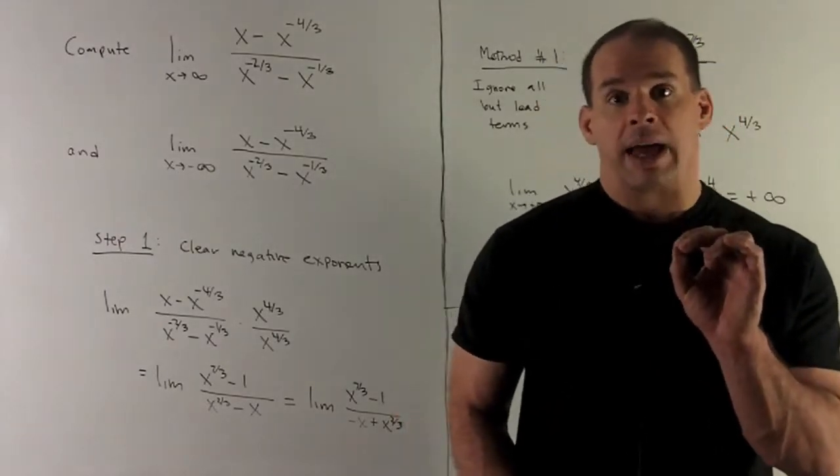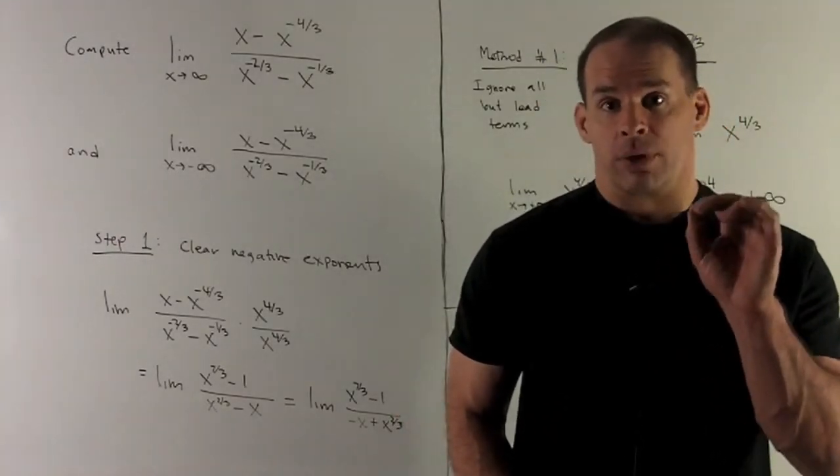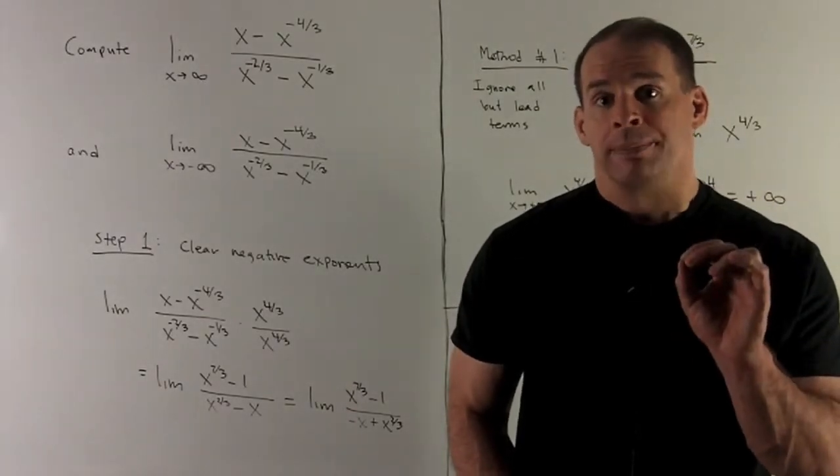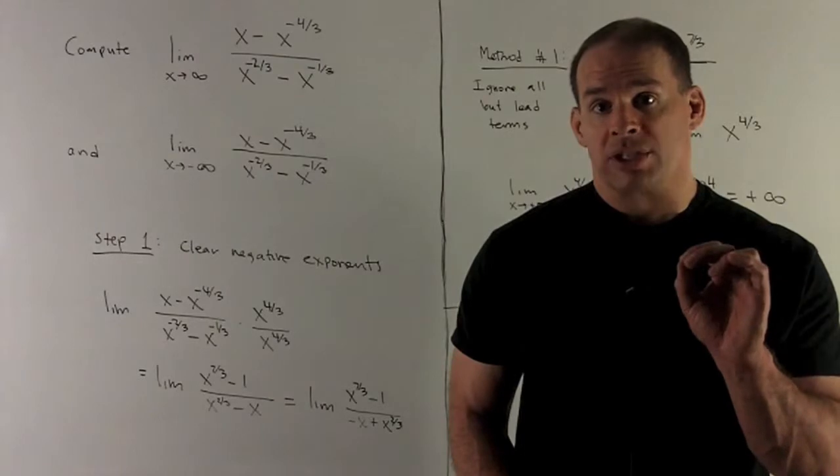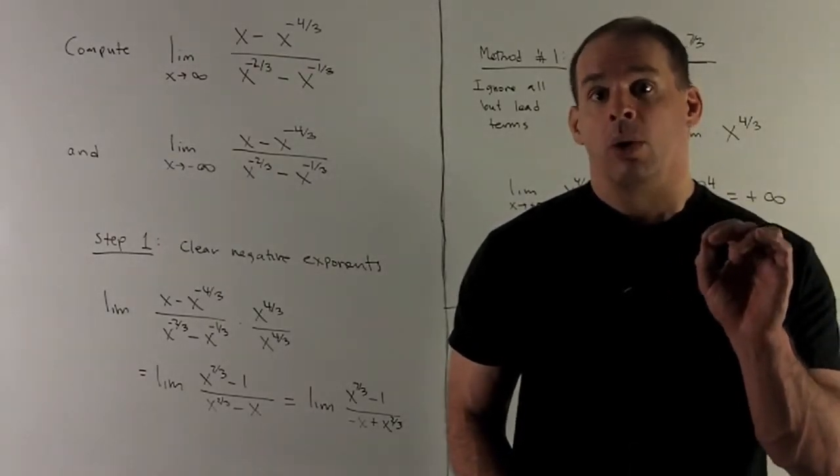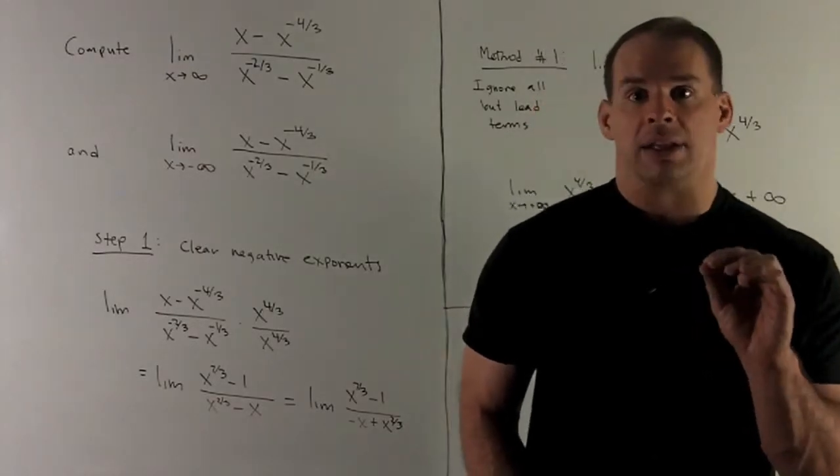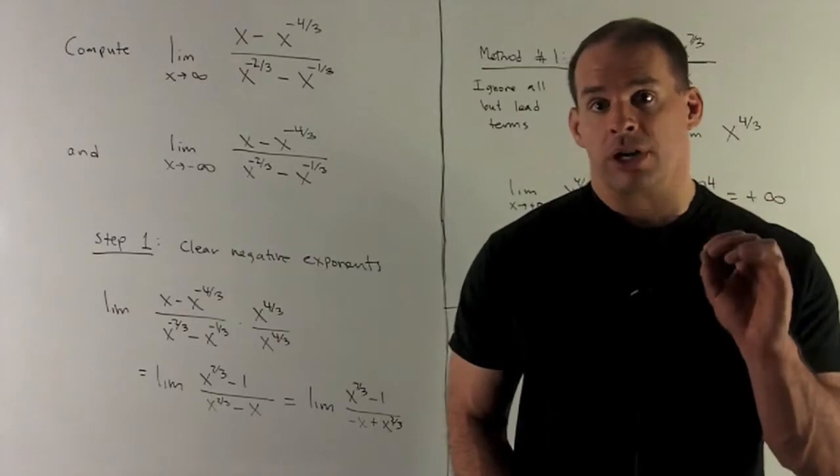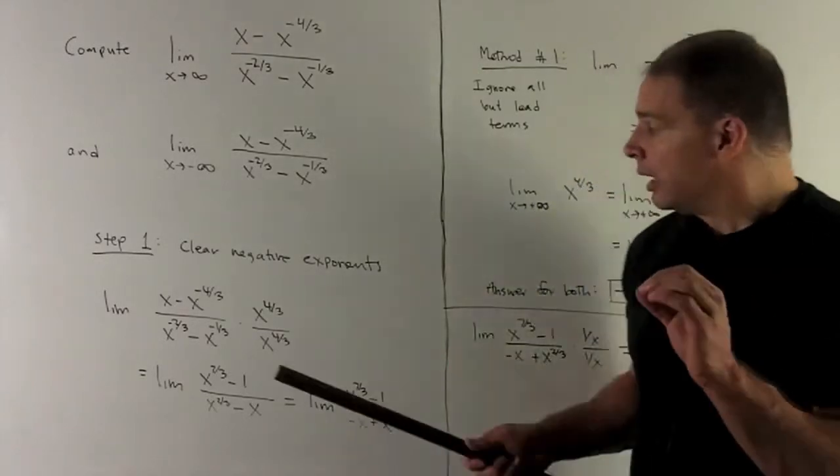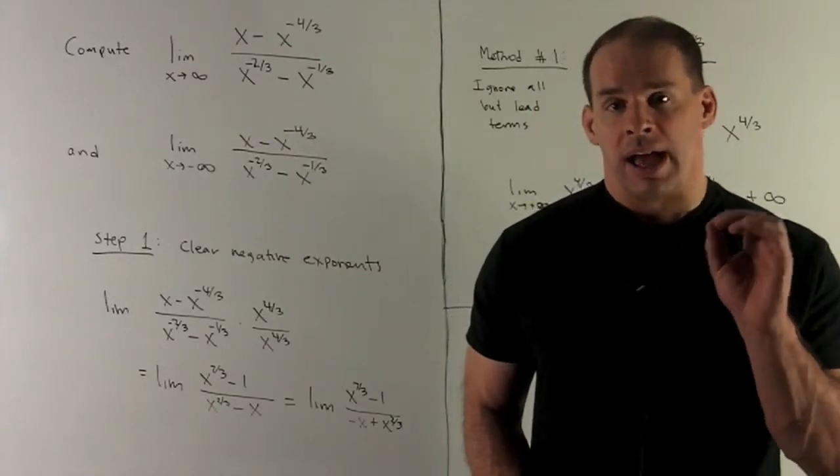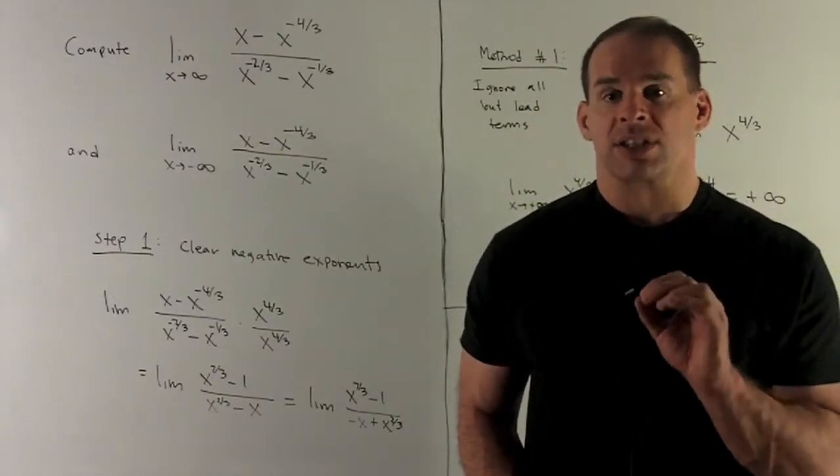We're going to multiply by x to the 4 thirds over itself. That's going to guarantee that all the exponents are going to change from negative to either zero or positive. So we multiply top and bottom by x to the 4 thirds. I'm going to get x to the 7 thirds minus 1 over x to the 2 thirds minus x.